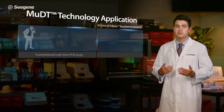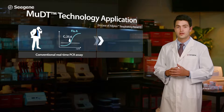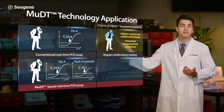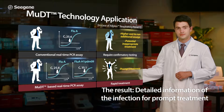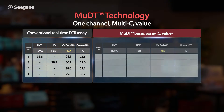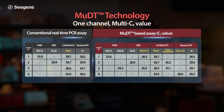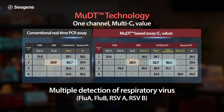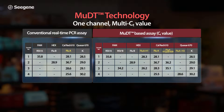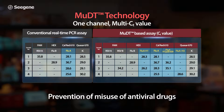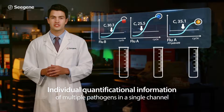MUDT is applied in Cgene's Allplex Respiratory Panel One. This panel can detect Flu A and its subtype simultaneously with CT values. Furthermore, Cgene's MUDT-based Allplex Respiratory Panel One provides infection information of other concomitant respiratory virus infections, providing a clear understanding of the complete disease state. This information supports faster and better patient care.